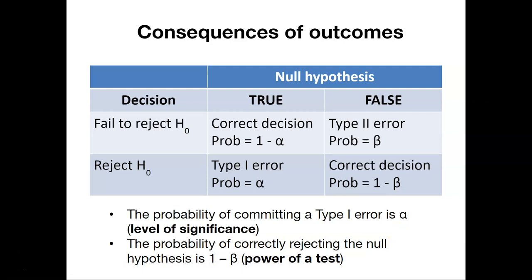The type one error is represented by alpha, that is the probability of committing that type one error, rejecting the null hypothesis when in fact it's true. This is a table we're going to come back to often in this class, because it helps us to decipher many of the statistical tests that we'll run.